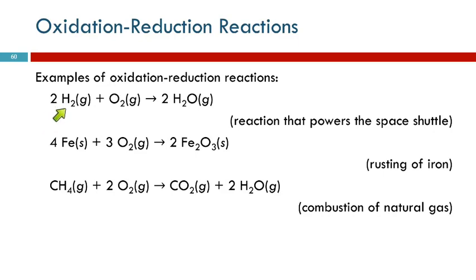Here we have hydrogen and oxygen gases combining to form water. That's the reaction that powers the space shuttle. Iron reacting with oxygen to form iron-3 oxide. This is rusting of iron. Methane reacting with oxygen. This is the combustion of natural gas. You have a gas stove at home. You turn it on. Use a Bunsen burner in the lab. This is what's going on.